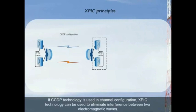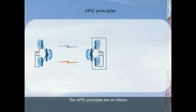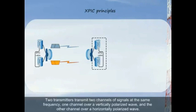If CCDP is used in channel configuration, XPIC technology can be used to eliminate interference between two electromagnetic waves. The XPIC principles are as follows. Two transmitters transmit two channels of signals at the same frequency, one channel over a vertically polarized wave and the other channel over a horizontally polarized wave.